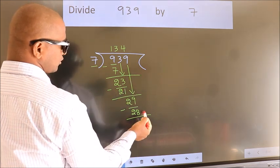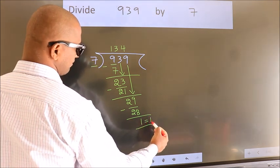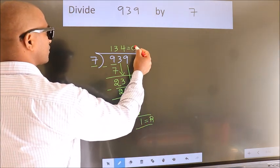No more numbers to bring it down. So we stop here. This is our remainder. This is our quotient.